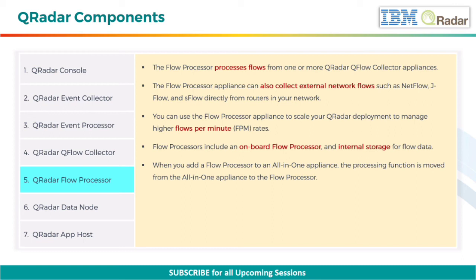Flow processors include an onboard flow processor and internal storage for flow data. When you add a flow processor to an all-in-one appliance, the processing function is moved from the all-in-one appliance to the flow processor.